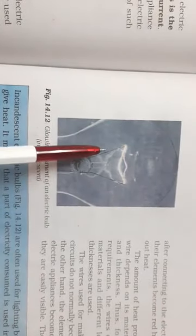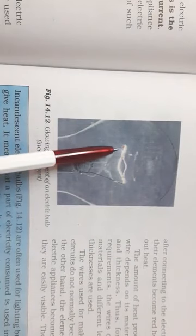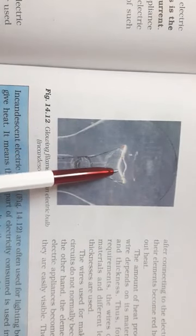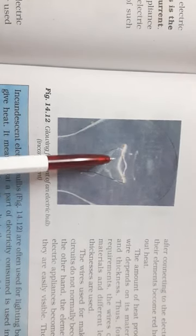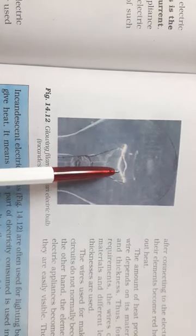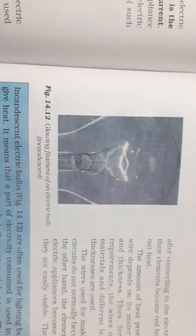One of the example is the filament of a bulb. You all have studied in class 6. Even the bulb, the filament of the bulb. When you put on the switch, the bulb glows. Why does the bulb glow? Because the filament becomes so hot, it is so hot that it starts glowing.